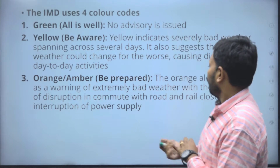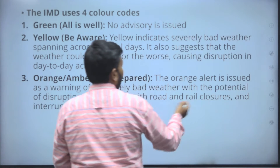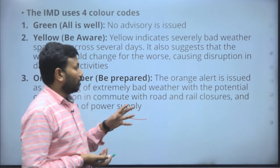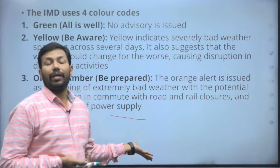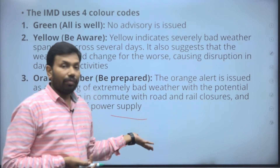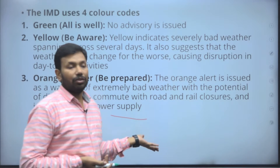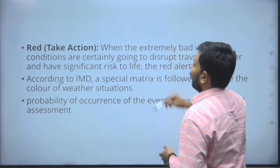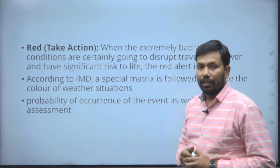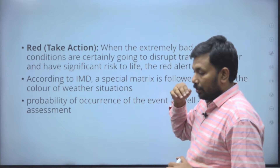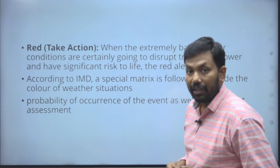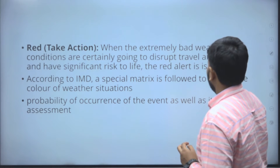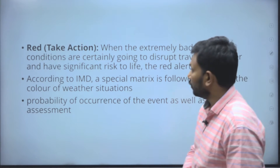Orange, also called amber, means 'be prepared' — anything can happen. Power supply interruptions, road and rail closures are possible; disaster is about to happen. Red means 'take action' — the danger is severe and has already occurred or is occurring. You must write all four color codes clearly in your answer.